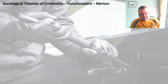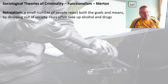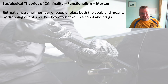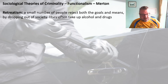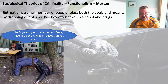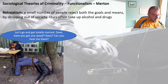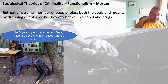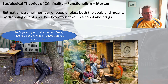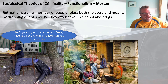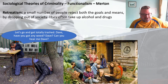Our next category is retreatism. Merton says there will always be a small number of people who reject both the goals and means of society and drop out altogether. He often said these people will take up alcohol and drugs, but not always. An example would be dropping out of society and going off to live in a hippie commune, far away from societal norms.